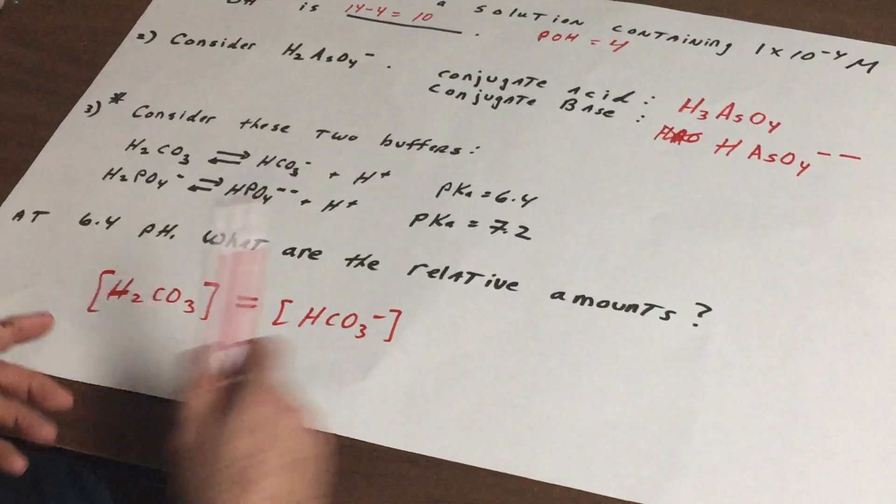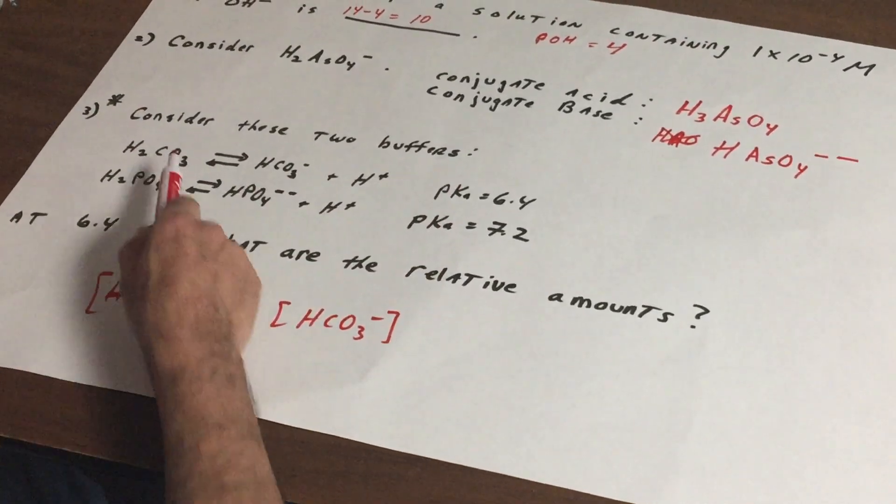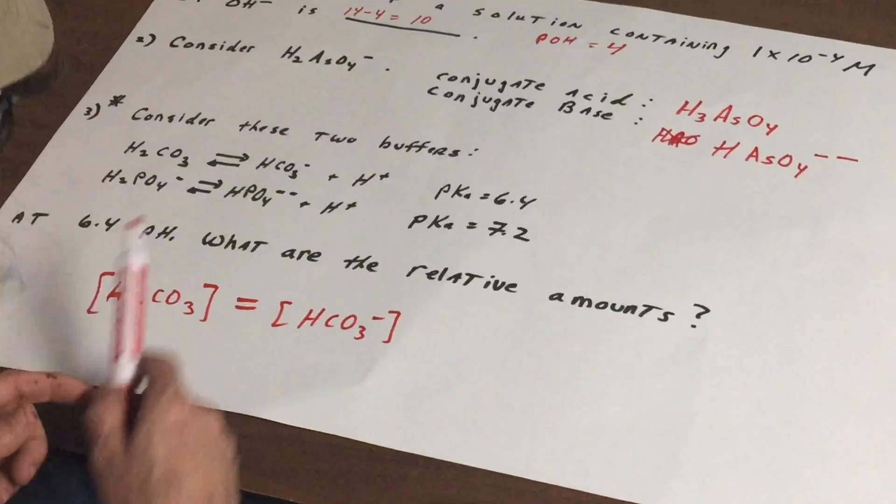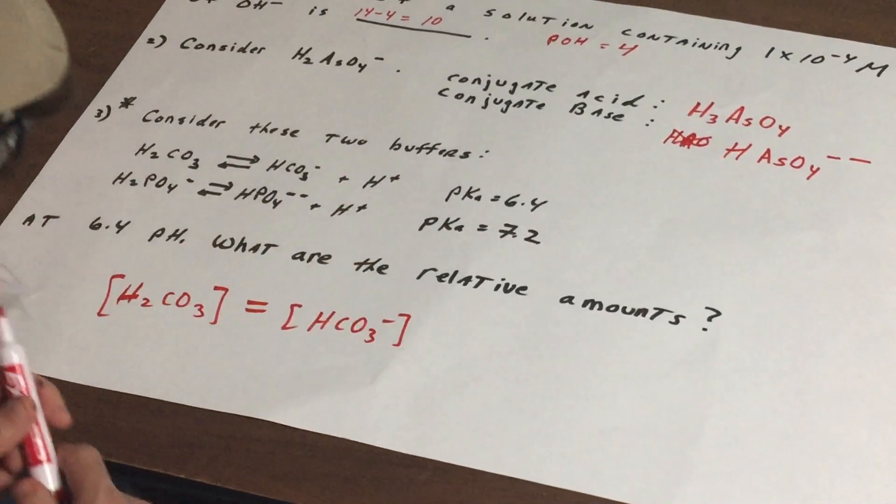So the H2CO3 concentration is equal to the HCO3- concentration. So you're going to get 50 and 50, and that's going to be a great buffer because you're exactly at the pKa and you got half in the protonated form and half in the deprotonated form.